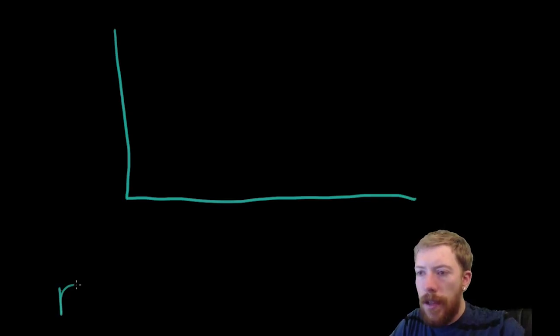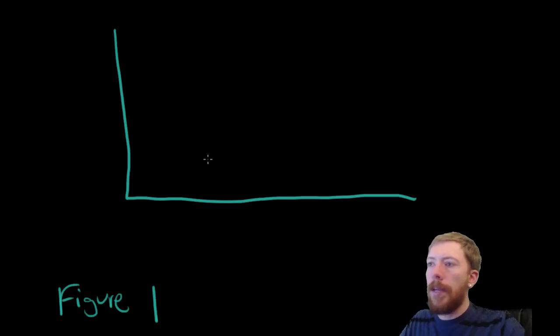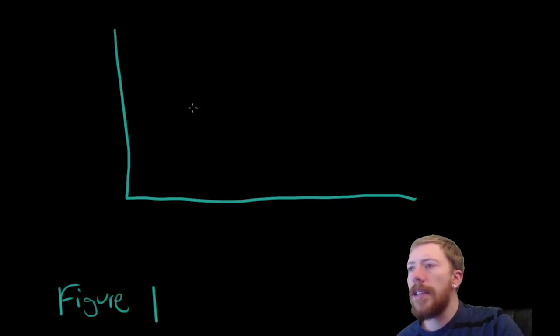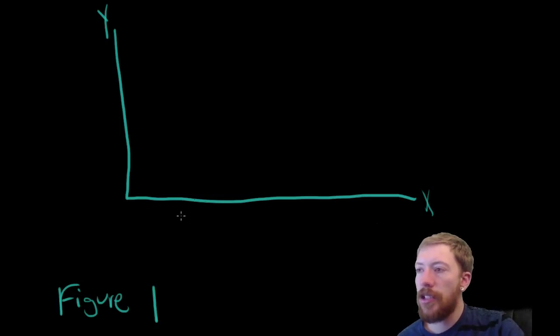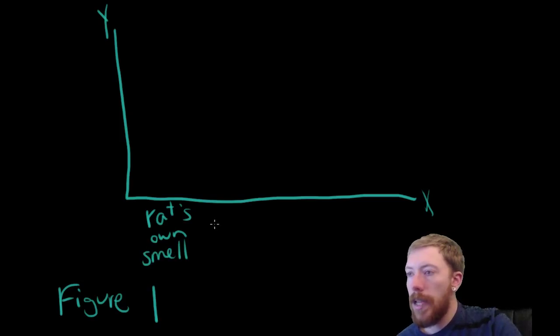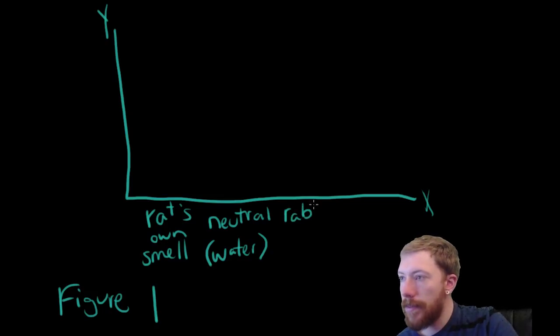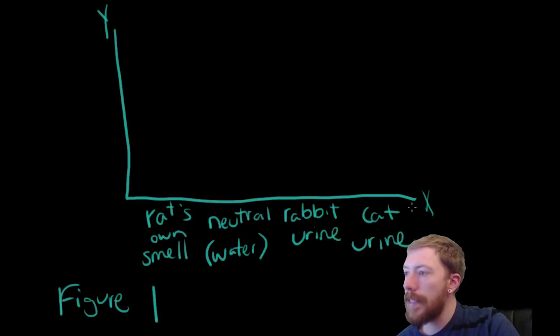Okay, so now we'll look at what the authors actually found. And if you guys are following along, this is figure 1 in the paper. And so, the way I like to approach these figures is, first, just define what is on the x and y-axis, what's being represented here. So, if you look at the x-axis, we have each subdivision of the box that we just talked about. So, we have the rat's own smell from one corner. We have what they're calling the neutral corner. This is our water corner. We have the rabbit urine. And lastly, we have cat urine. That's the x-axis.